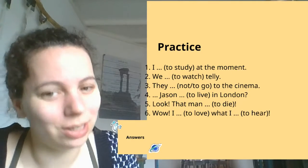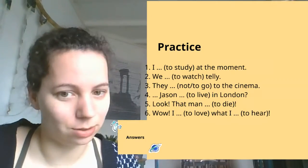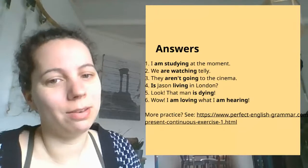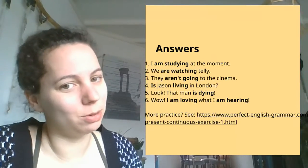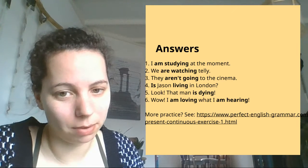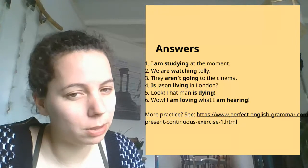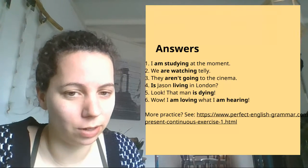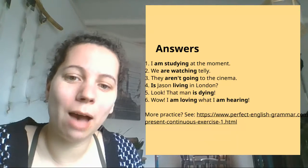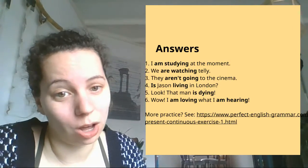You have restarted the video, so that means you're probably done. Let's go over the answers. In sentence one: 'I am studying at the moment' — using 'am' because it's I, and I always comes with am. 'Studying' just gets -ing at the end. In sentence two: 'we are watching' — we gets 'are' and 'watching' just gets -ing.